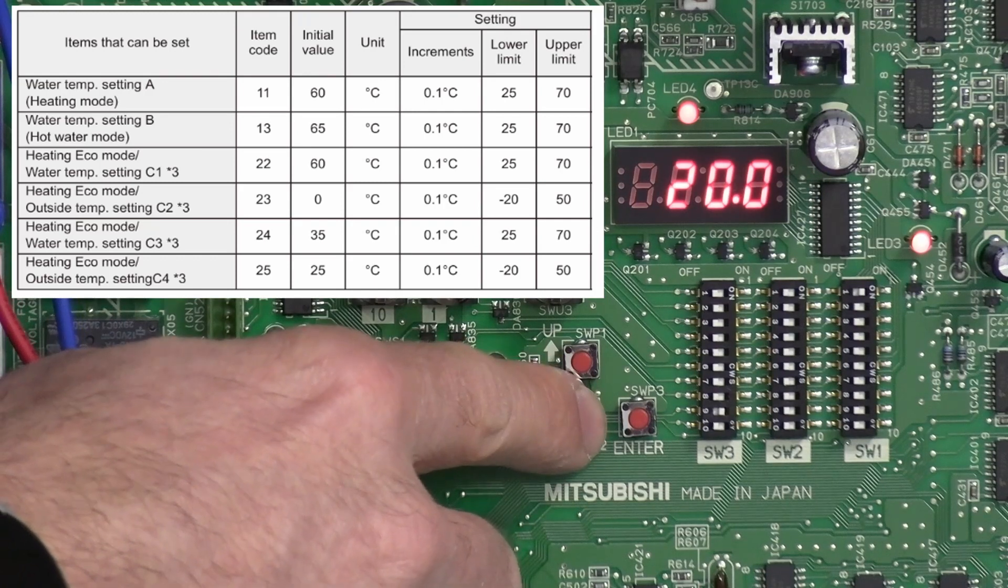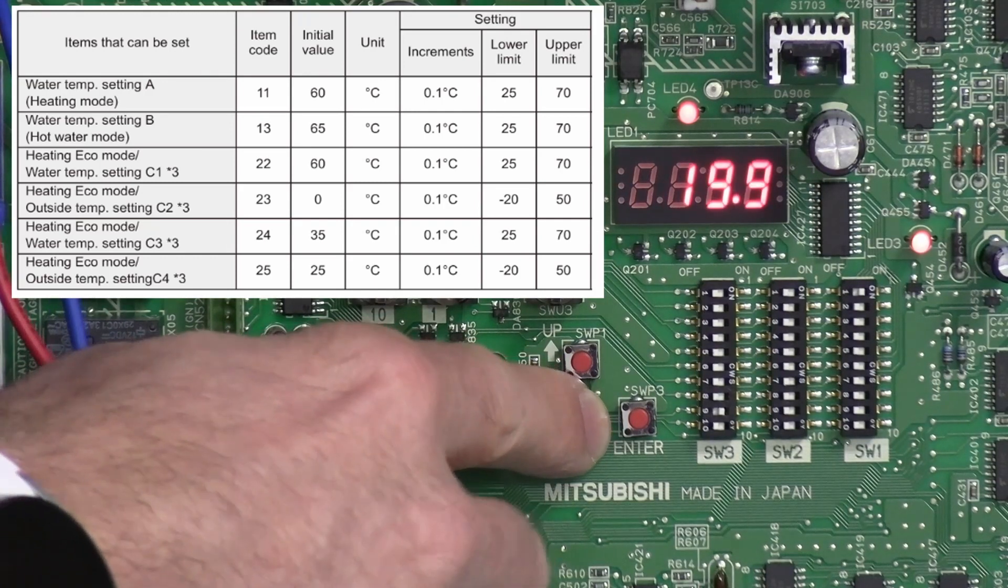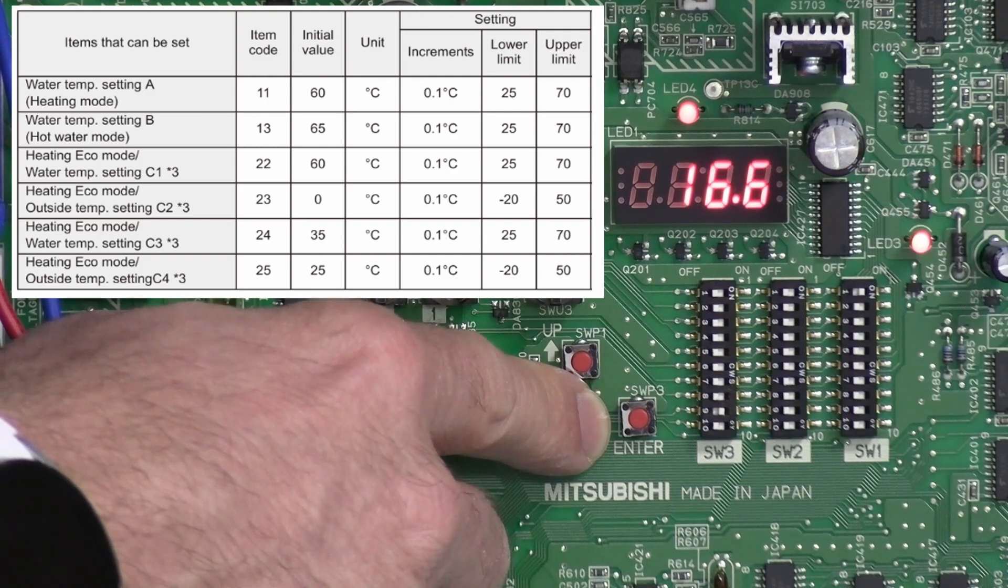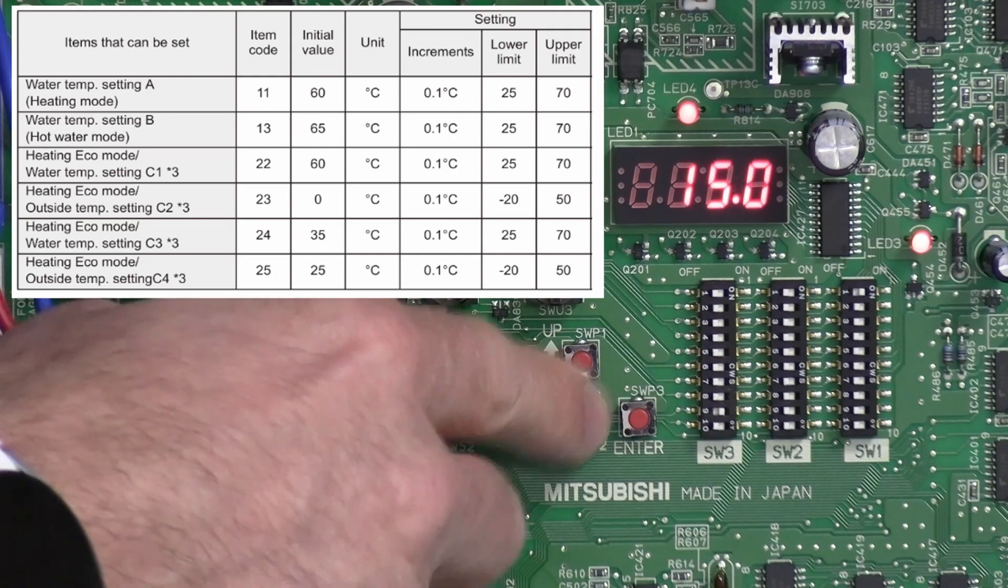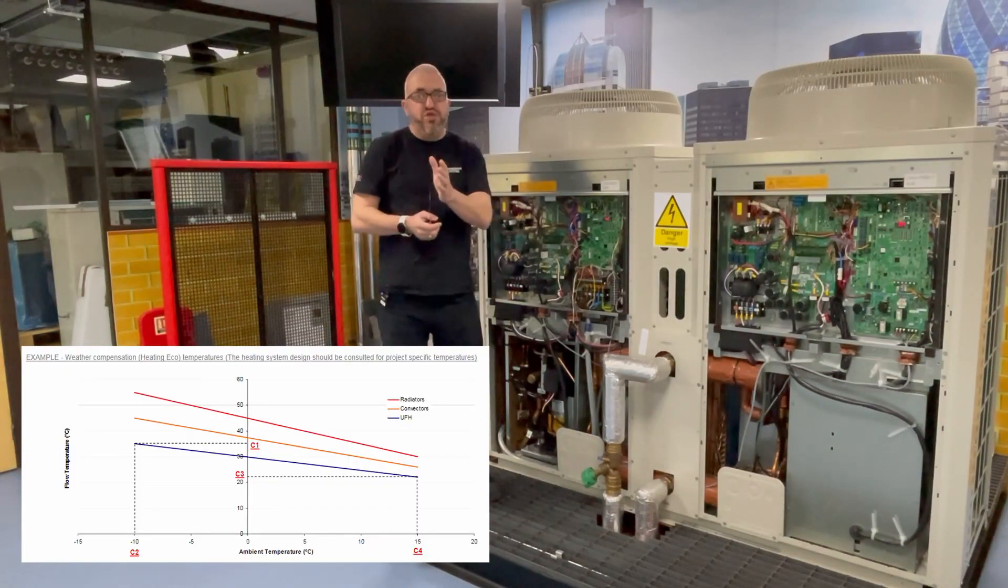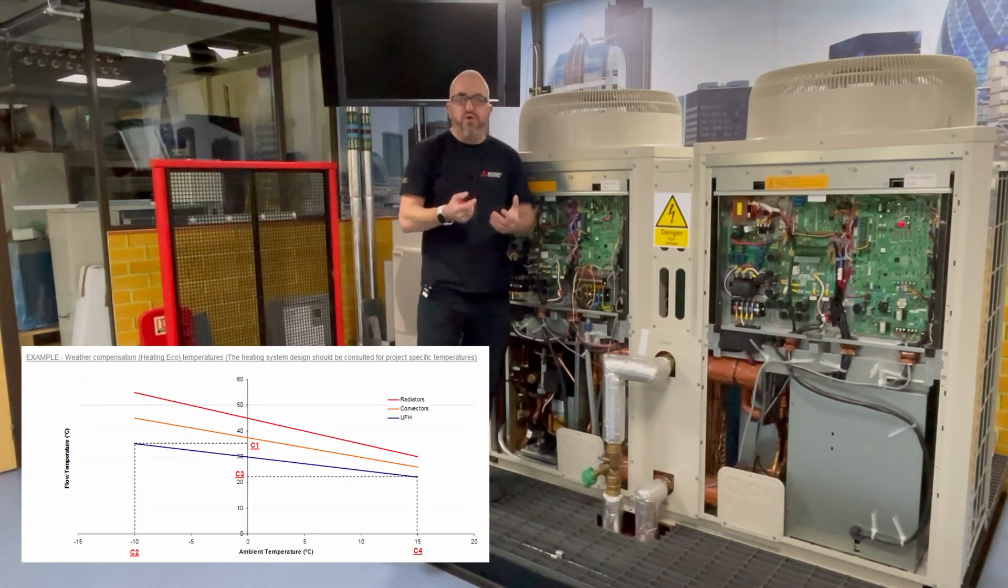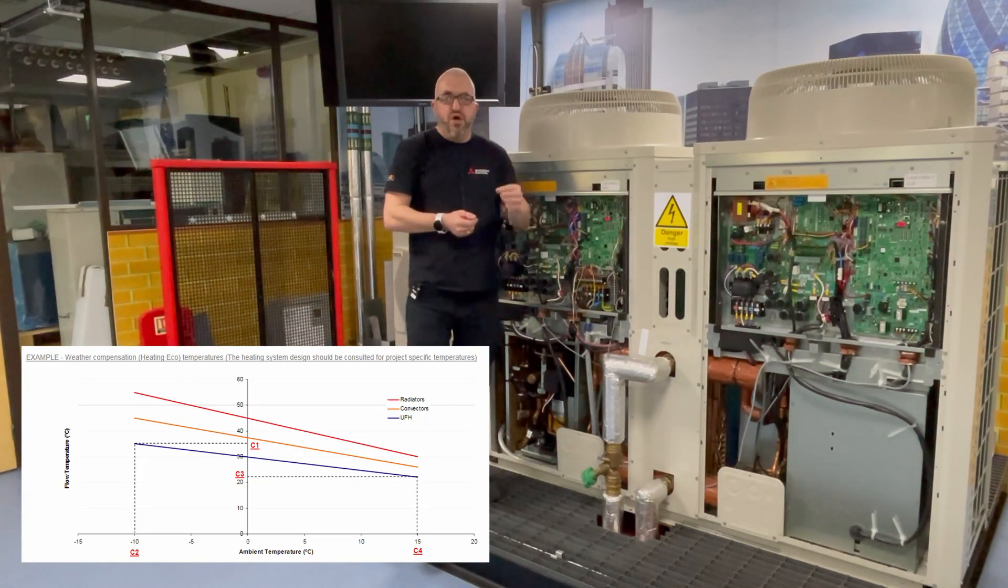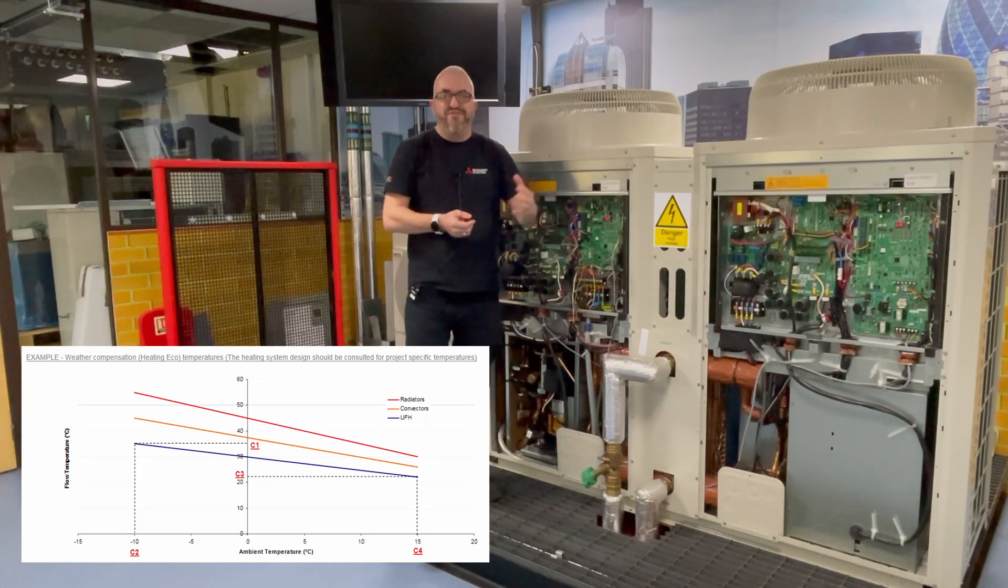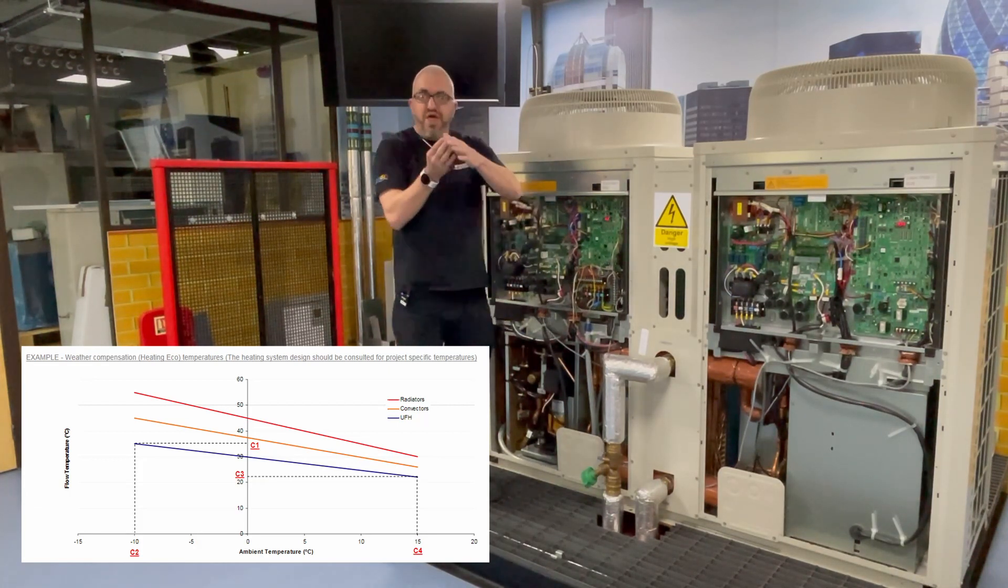And it's currently set to 20 degrees. Let's bring that down a bit, let's say that's maybe 15. Okay, so we say 15 degrees it's going to operate. So 15 degrees or higher it's going to operate at 45 degree flow, or zero degrees or below it's going to operate at 65 degree flow. So that's the linear scale we've set for the target temperature of that water in the system.